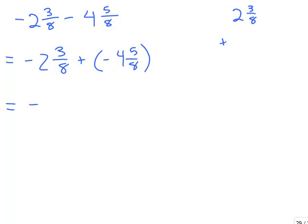When adding numbers with the same sign — both negative — we just add. So I have 2 and 3 eighths plus 4 and 5 eighths. I'll leave them as mixed numbers. 2 plus 4 is 6, and 3 eighths plus 5 eighths is 8 eighths. That means 6 plus 8 over 8. But 8 divided by 8 is 1, so this becomes 6 plus 1. My answer is negative 7.